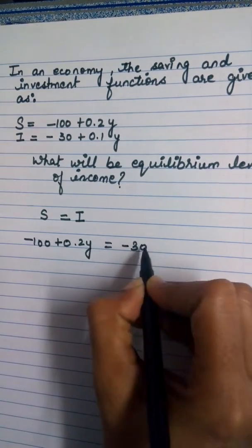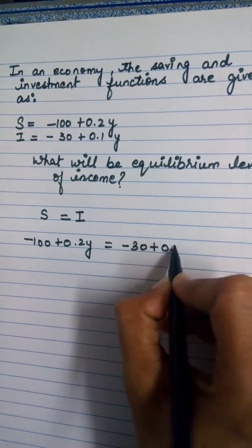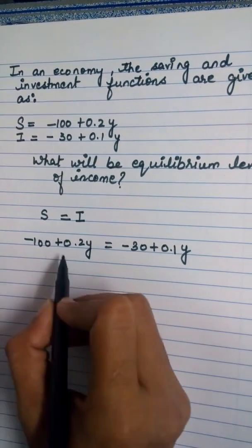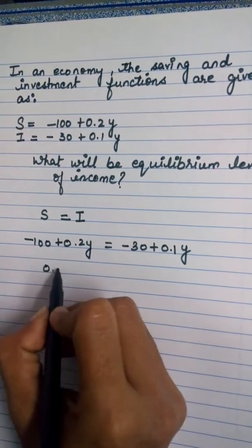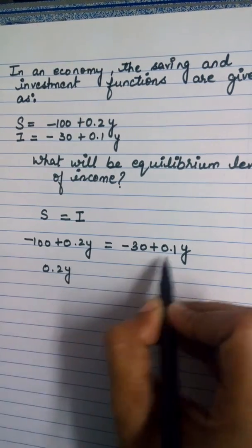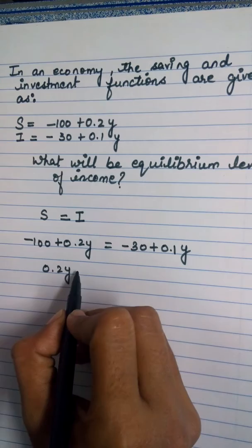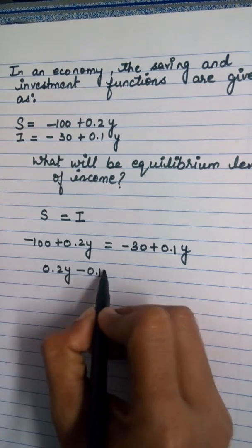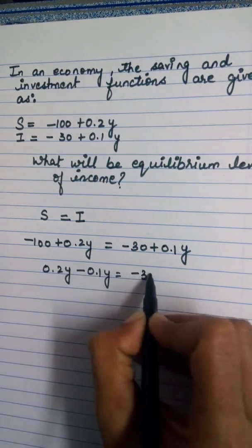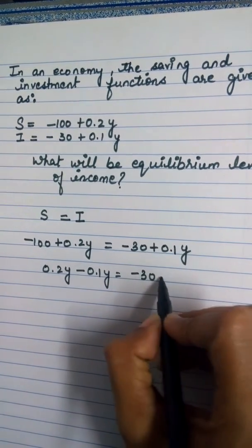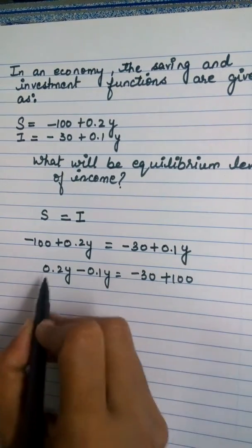What we will do now is put the Y terms on one side. Moving the hundred to the right side, it becomes plus hundred. 0.2Y minus 0.1Y gives us 0.1Y.